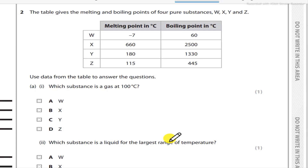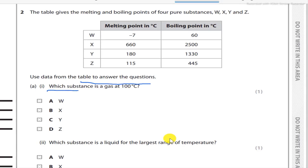Use data from the table to answer the question: which substance is gas at 100 degrees Celsius? The answer is substance W, option A, because both the melting point and boiling point of W are below the given temperature of 100 degrees Celsius. That is why W is already in the gas state at 100 degrees Celsius. So A is the correct answer.